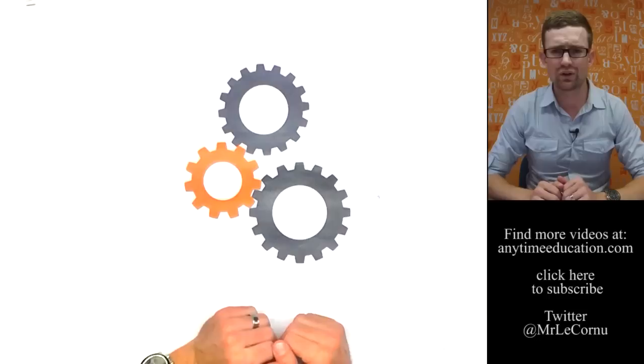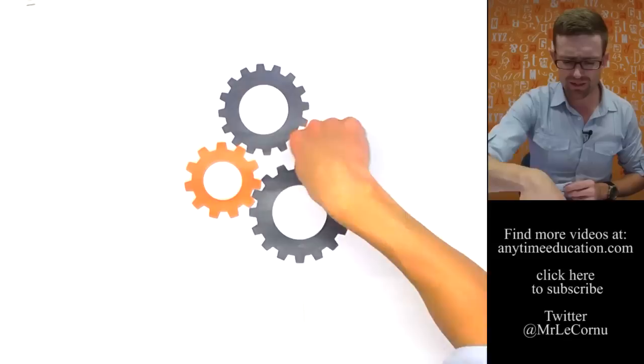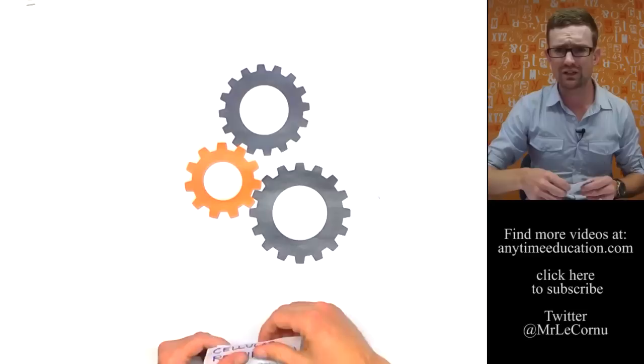So just one more way to look at it. I've got these three cogs here or gears. Now, let's label these different gears. Now, remember, if this one's moving, it will drive this one and that will drive this one.